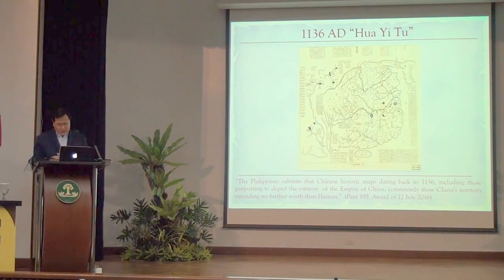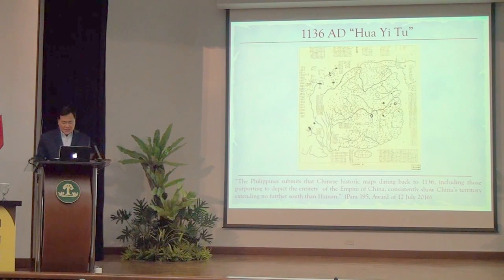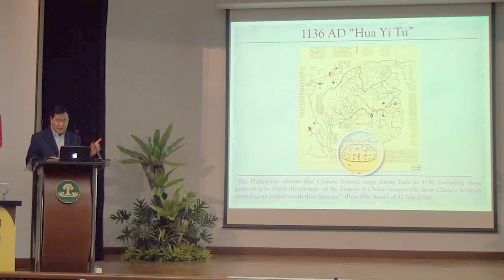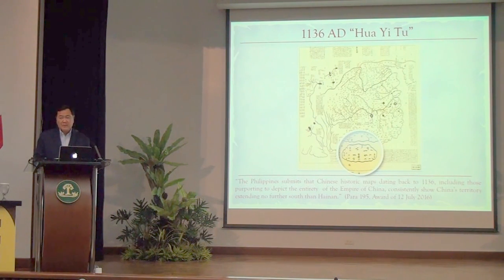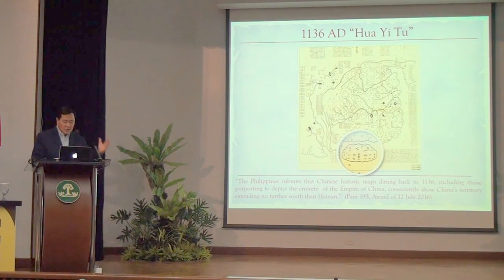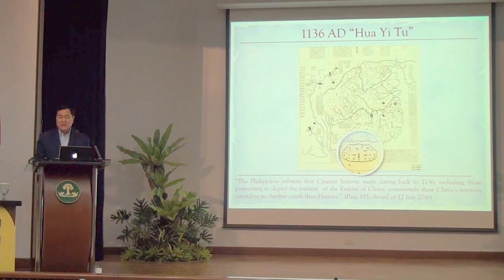How did we prove to the tribunal that historically China never controlled the waters or resources of the South China Sea? We presented ancient maps. The oldest is a 1136 Song Dynasty map — 'China and the Barbarian Countries' — which shows the southernmost territory of China as Hainan. This map is engraved in stone and can still be seen in the Museum of Stone Steles in Xi'an, China. Through all the Chinese dynasties — Song, Yuan, Ming, Qing — the southernmost territory of China has always been Hainan.